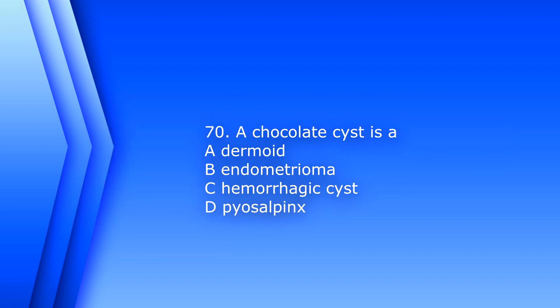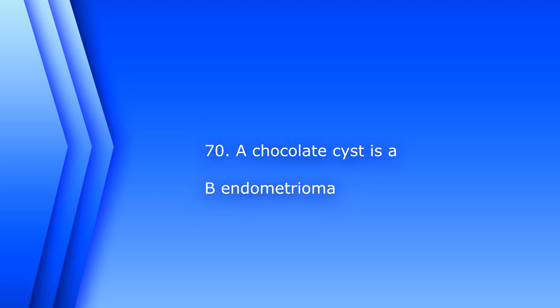Question 70. A chocolate cyst is: A. Dermoid, B. Endometrioma, C. Hemorrhagic cyst, D. Pyosalpinx. The answer is B, Endometrioma.